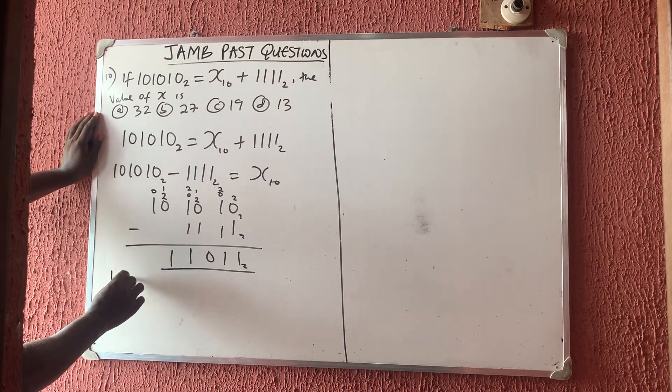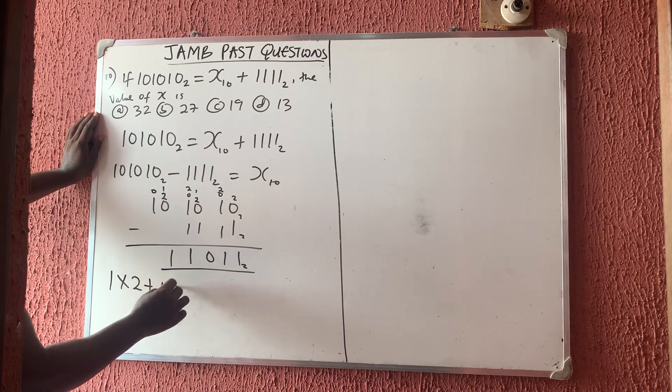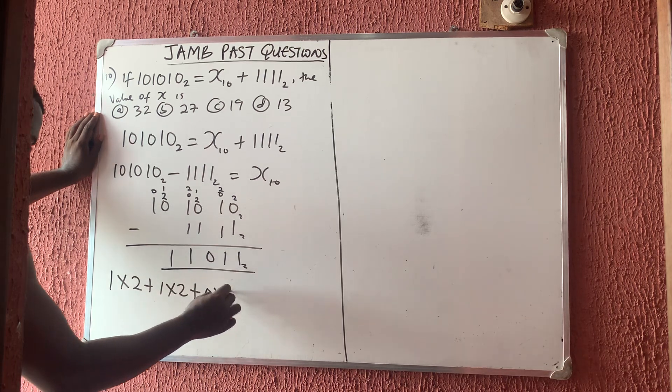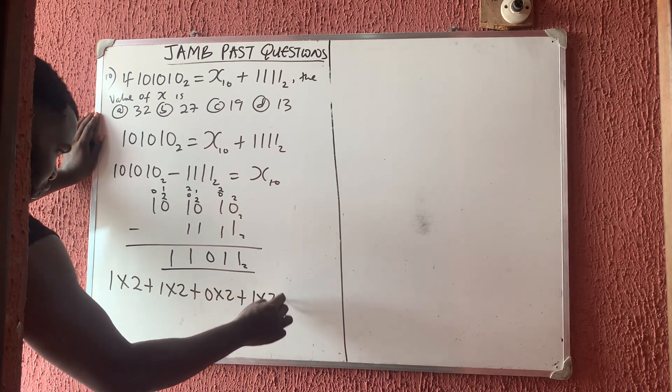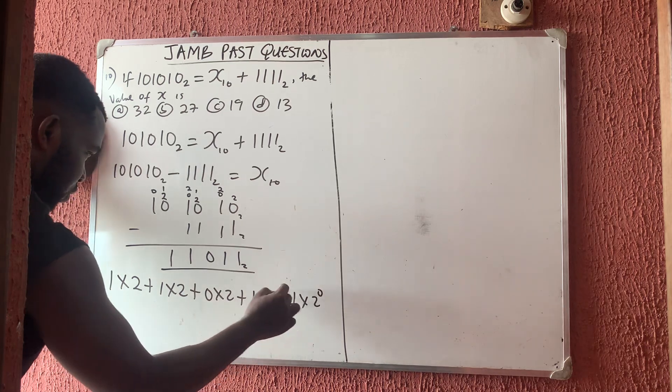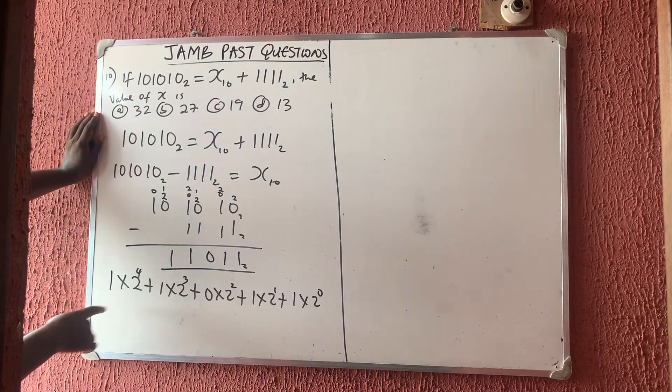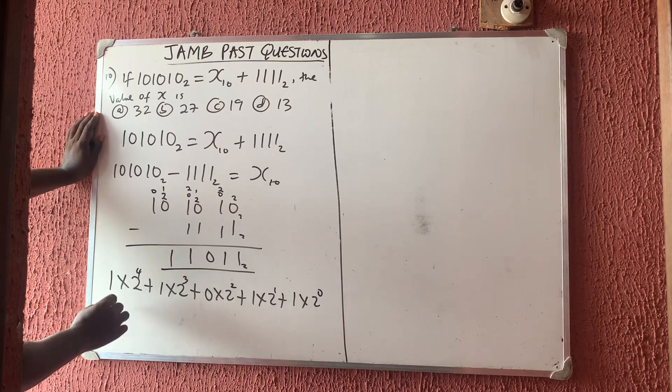Convert it to base 10 will give you 1 times 2⁴ plus 1 times 2³ plus 0 times 2² plus 1 times 2¹ plus 1 times 2⁰. This will give you 16 because 1 times 16.